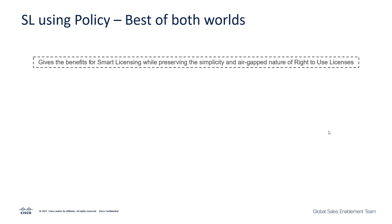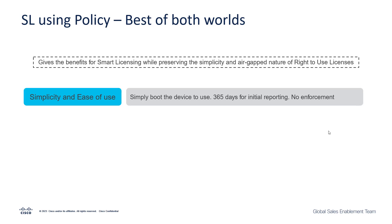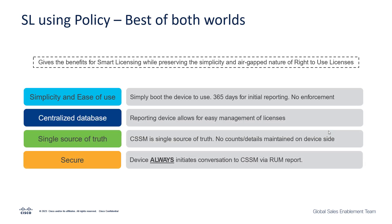In conclusion, when we use smart licensing using policy, we're really getting the best of both worlds. The first benefit is simplicity — we have the simplicity and the air-gap nature of right-to-use licenses. You simply boot up the device and you're able to start using it. If it's a new device, you have 365 days for initial reporting and there is absolutely no enforcement even if you don't report after 365 days. We also have CSSM acting as a centralized database, giving us end-to-end visibility of licensing across our network and serving as a single source of truth, since the end device has absolutely no view on the licensing level.